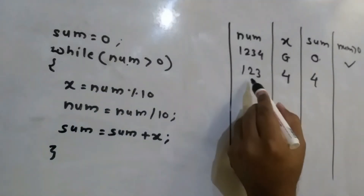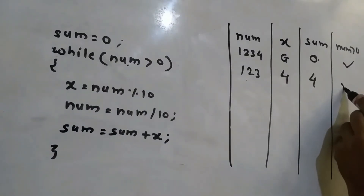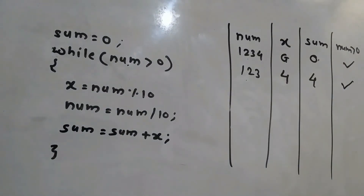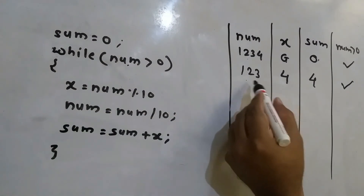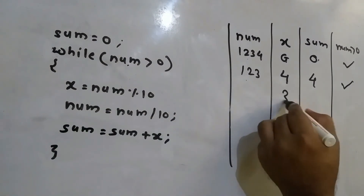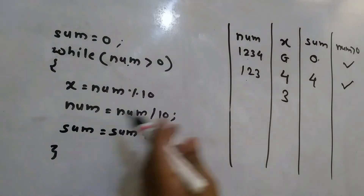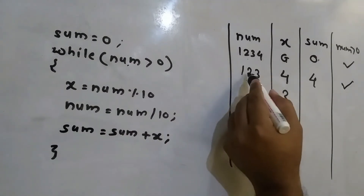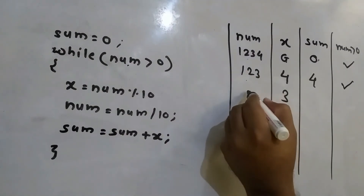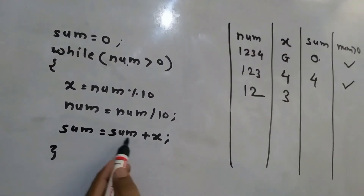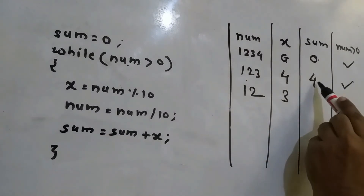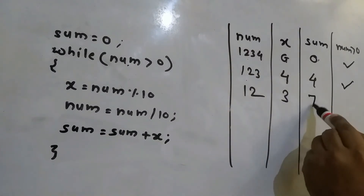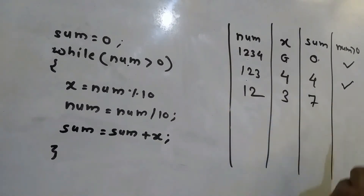In the next iteration, 123 is greater than 0, so condition is true. x equals num mod 10 — 123 mod 10 is 3, so x is 3. num equals num divided by 10, so 123 divided by 10 becomes 12. Sum equals sum plus x, which is 4 plus 3 equals 7.